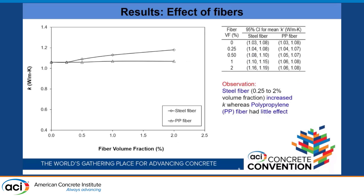We also looked at fibers — steel fiber and polypropylene fiber. Polypropylene fiber is not a conductive material, so there was not much change in conductivity up to 2% by volume of concrete. Steel fiber, being more conductive, did show an increase, but only after 0.5% volume fraction — suggesting 0.5% is the percolation threshold for thermal conductivity.